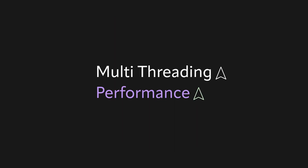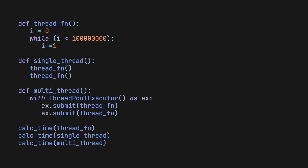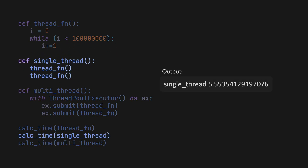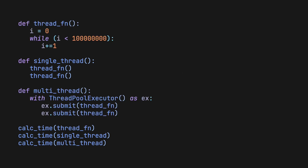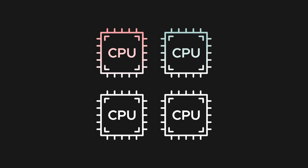That being said, there are situations where multi-threading can increase performance. In this code, we have a dummy function that counts to a large number. If we were to run the function twice, it takes about 5.6 seconds, which is about two times more than how long it takes to run it once. When we try to multi-thread it, the magic of threads should allow it to run two times faster. And this is why people dislike the GIL and all of its limitations. To actually speed up the code, we would need to take advantage of multiprocessing.